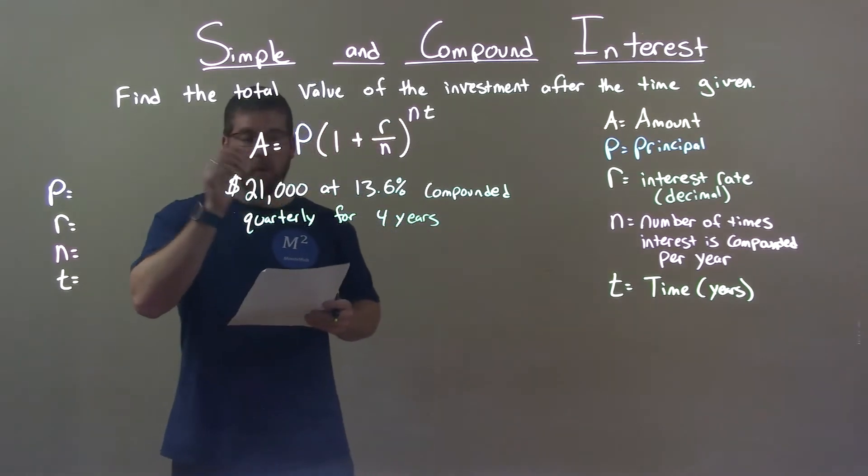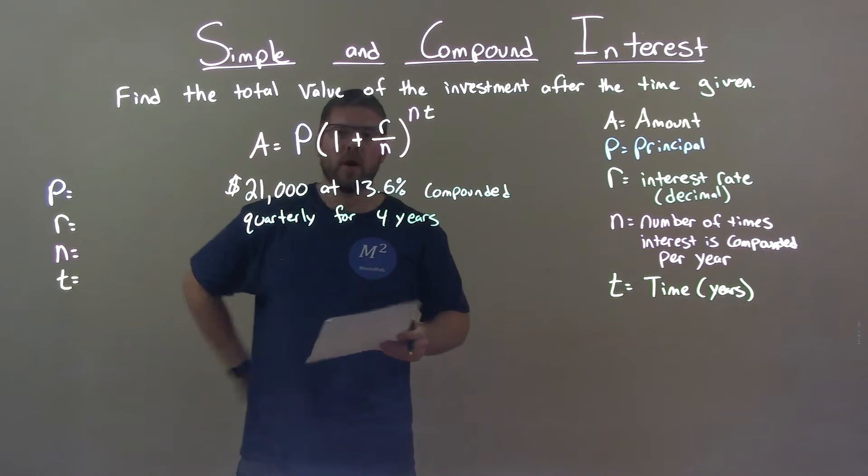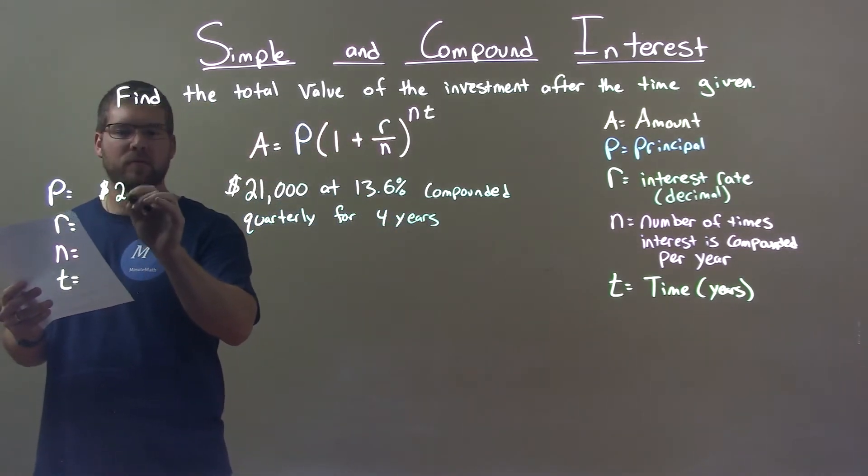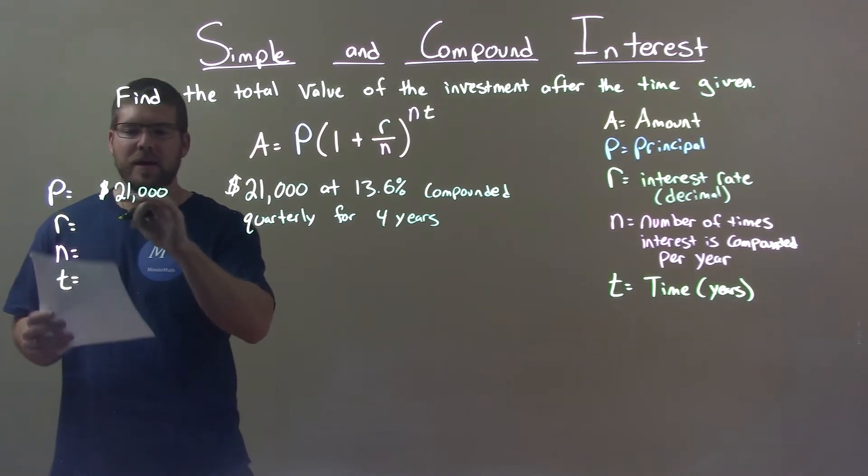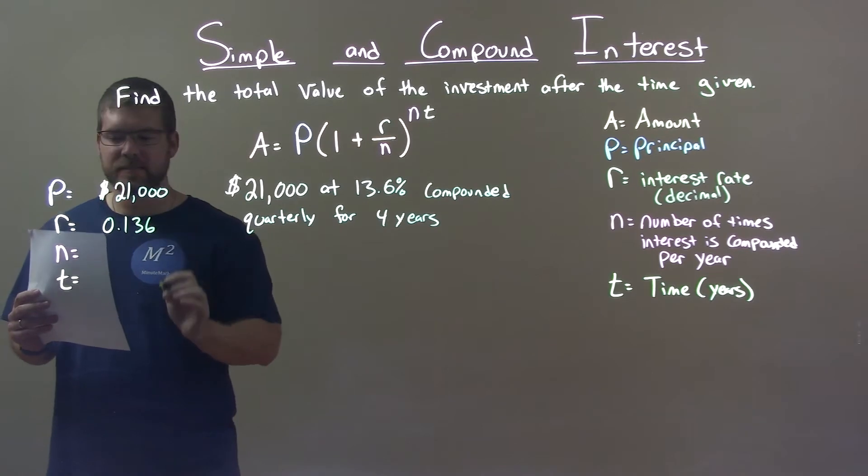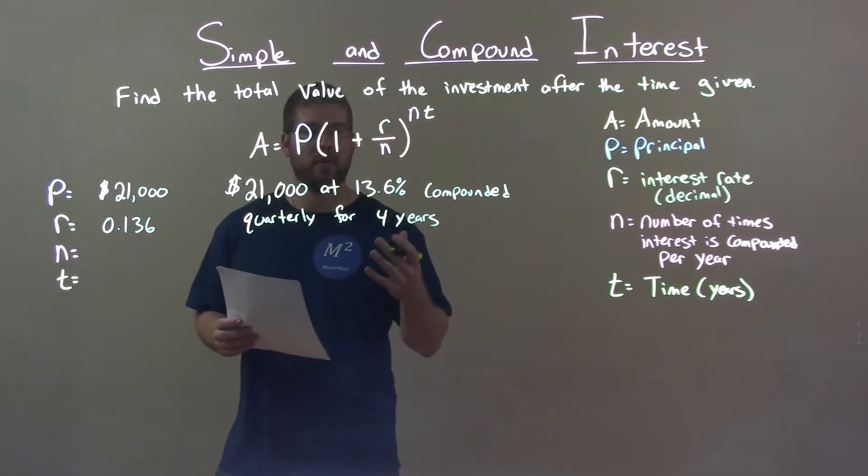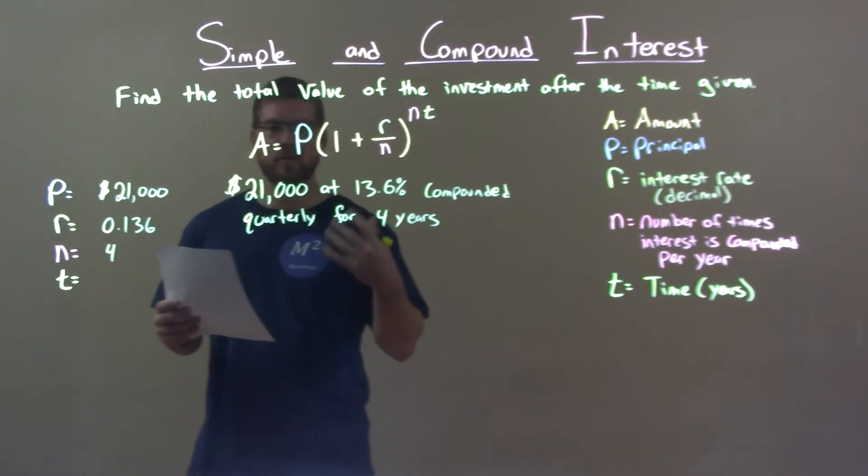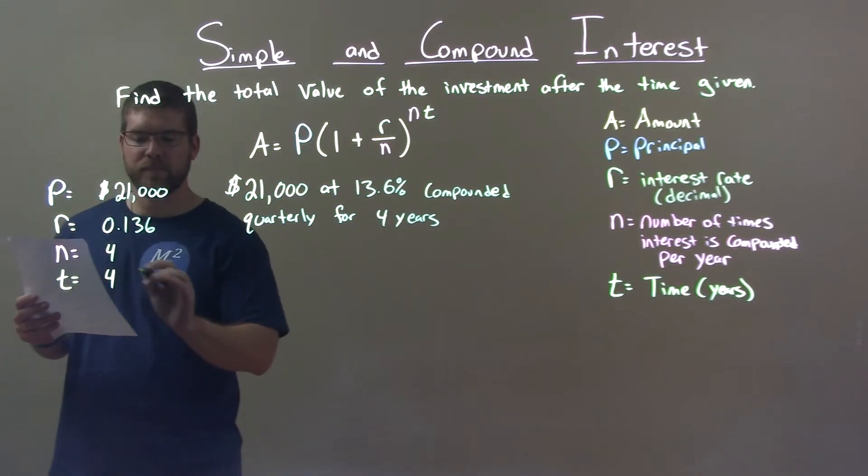Alright, well what I want to do is first take from that word problem and find my variables needed. Principle, first thing that's written here, my starting amount, $21,000. Interest rate as a decimal, 0.136. Number of times we compound within a year, quarterly means 4 times in a year. And the number of years we're compounding here is 4.